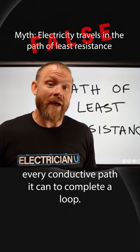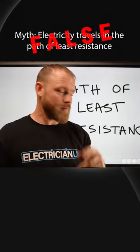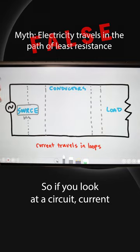So electricity is going to take every conductive path that it can to complete a loop. So if you look at a circuit, current always travels in loops.